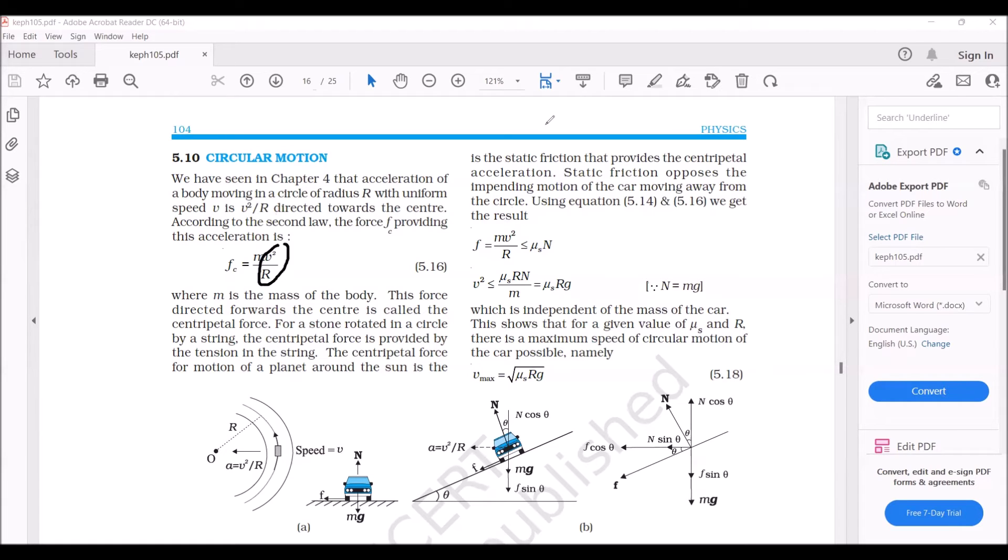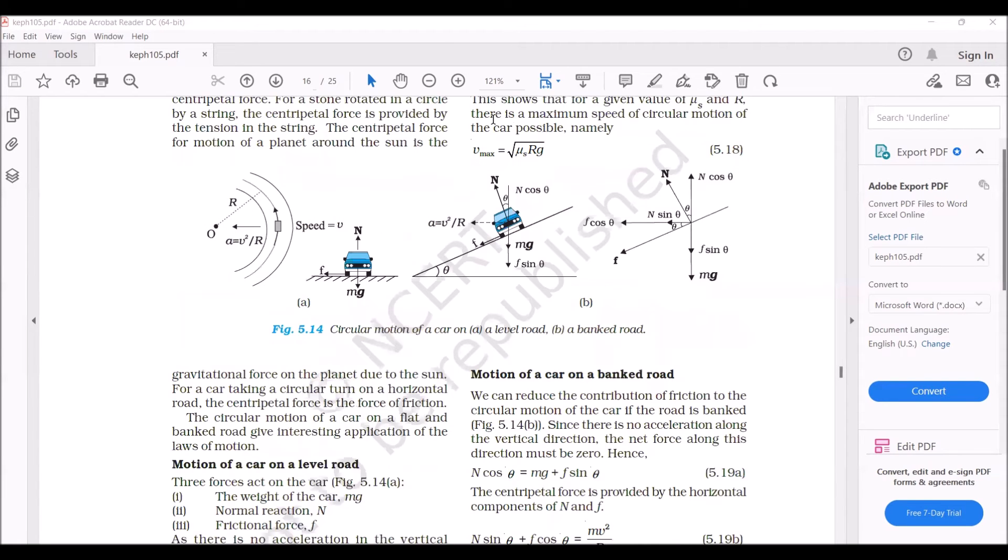This force which is directed towards the center is called centripetal force. When we take a string, if we tie an object and rotate this string from the center, then the tension of this string acts like a centripetal force. One more example is our Earth is revolving around the sun.